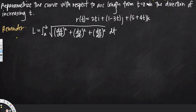In this video we are going to see how to reparametrize this curve with respect to arc length. In order to do this, we have to first find the arc length with the given information, and then replace the t values with arc length — that is, we have to write the function in terms of arc length.